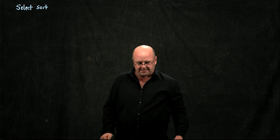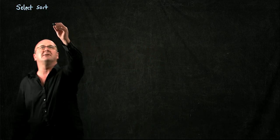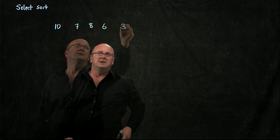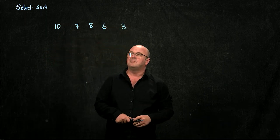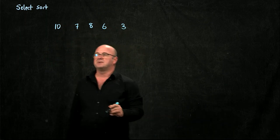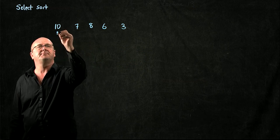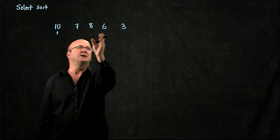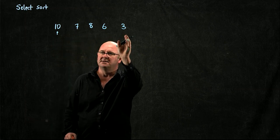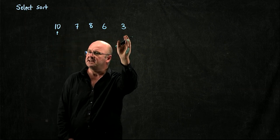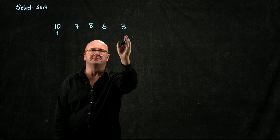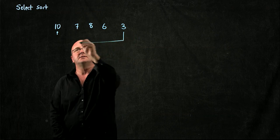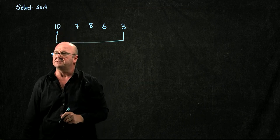The way that SelectSort works is that we have a list of numbers. We start at position 0, and we go through the list and we try to find the smallest thing in the list. We do find the smallest thing in the list, and we swap the smallest thing in the list with the thing at position 0.